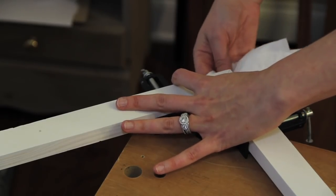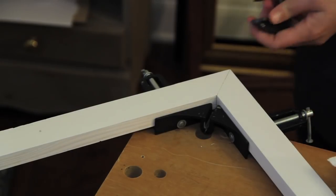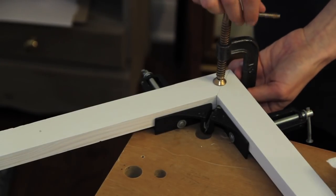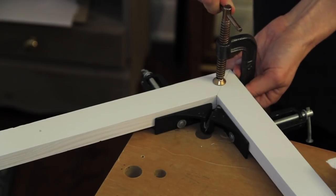If there's any extra glue coming out the seam, just wipe it off. And if you'd like a little bit more security, you can always use a c-clamp.